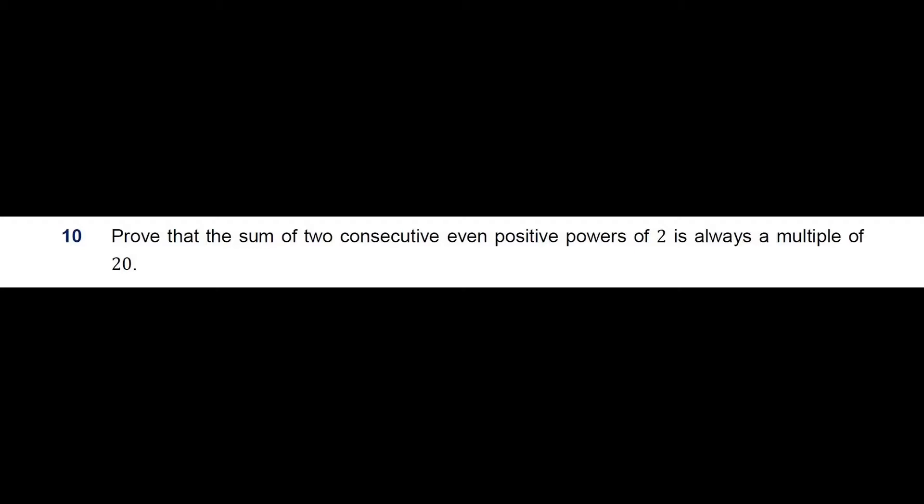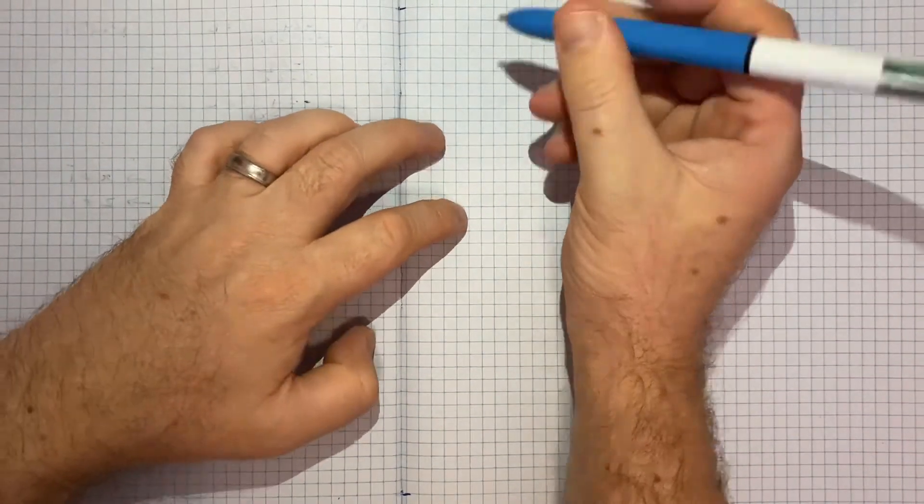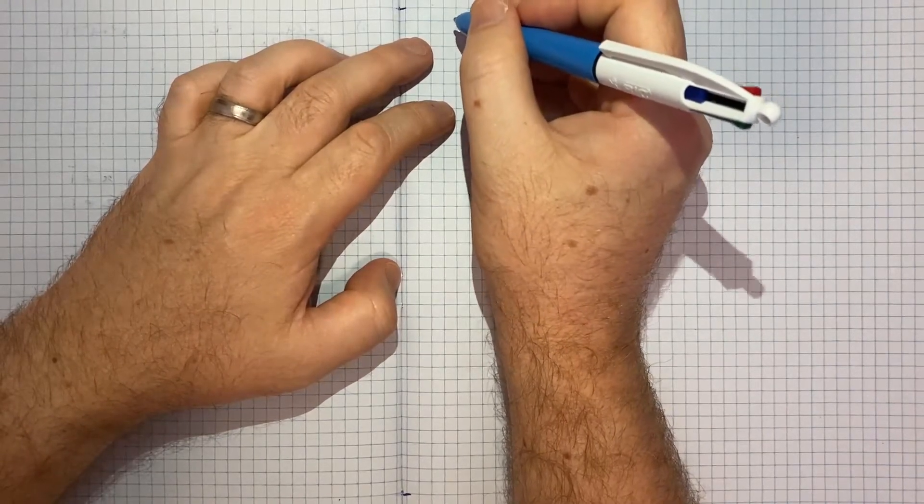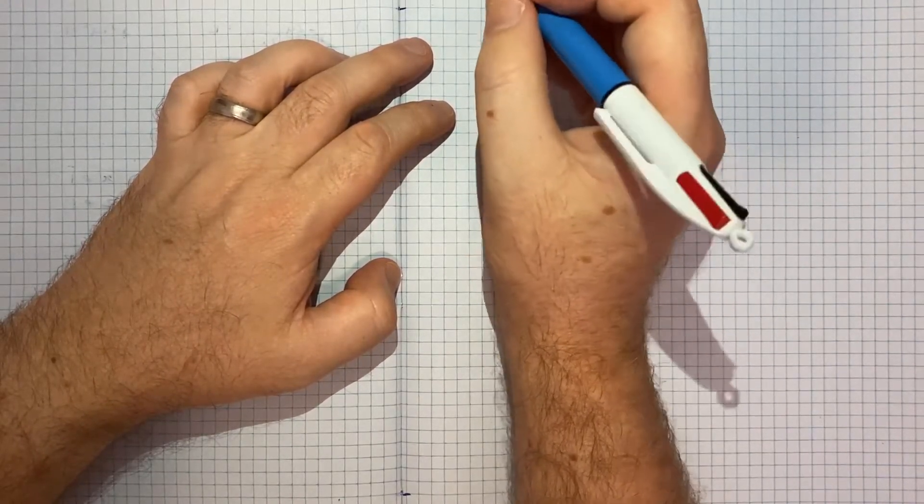So we're adding up two things, those two things that we're adding up are the consecutive even positive powers of 2. So if I just come and write down what we're dealing with, we want the sum of two things being the two even consecutive powers of 2.